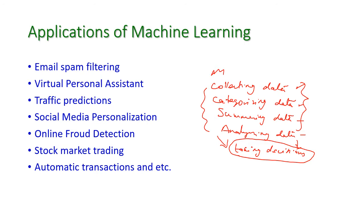Apart from this, some other applications of machine learning are also there. The first one is email spam filtering, the second one is virtual personal assistant, traffic predictions, social media personalization, online fraud detection, stock market trading, automatic translations, and more. Let us see all these things one by one.